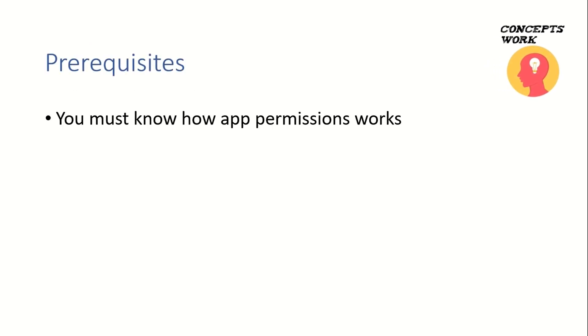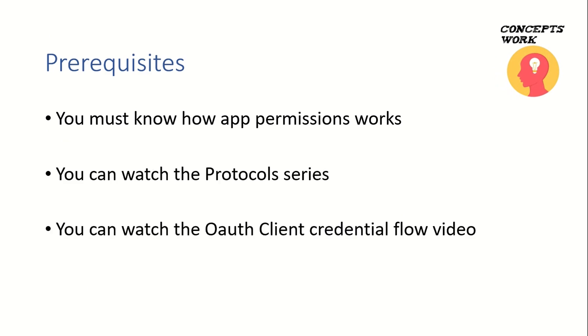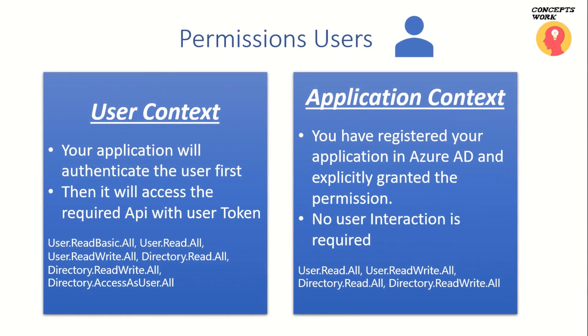You must know how the app permissions part works and you must have an idea about how OAuth 2.0 client credential flow works. I have already covered all this in a lot more detail, so if you want to know more you can go ahead and watch the protocol series which is already on the channel. Now let's proceed by knowing the permissions required to access the user endpoint through Microsoft Graph API.